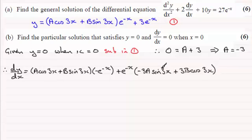Okay so that's the product rule for differentiating this first term here. Differential of 3e to the minus x is just going to be minus 3e to the power minus x.